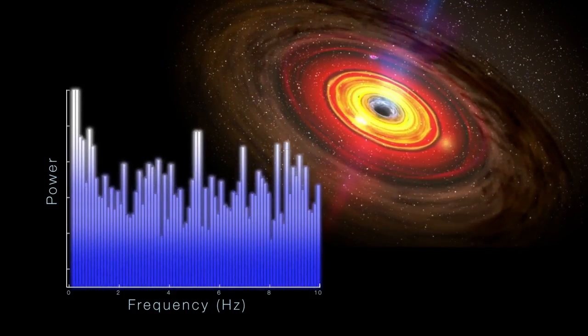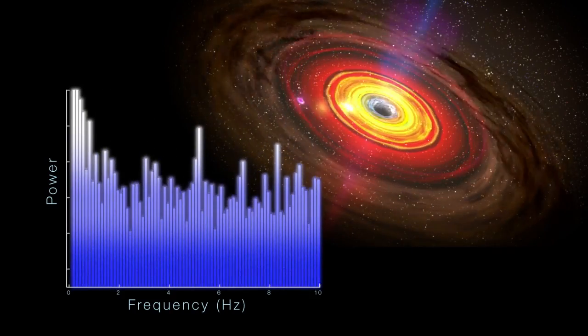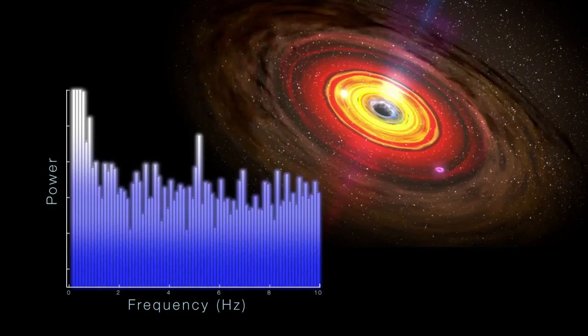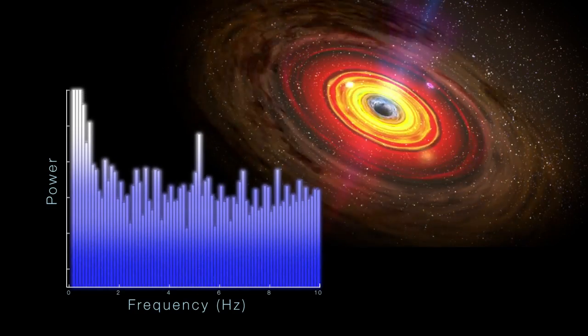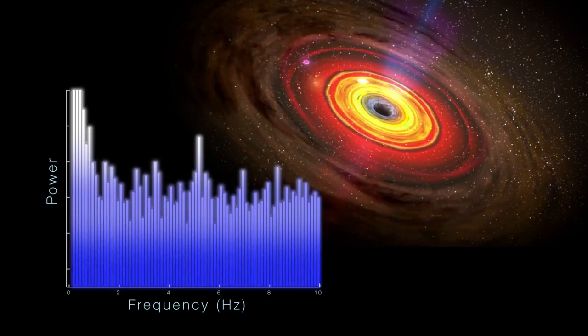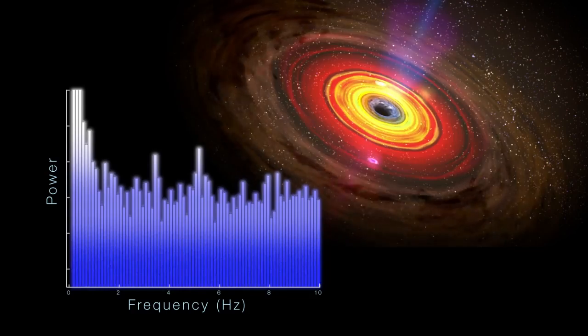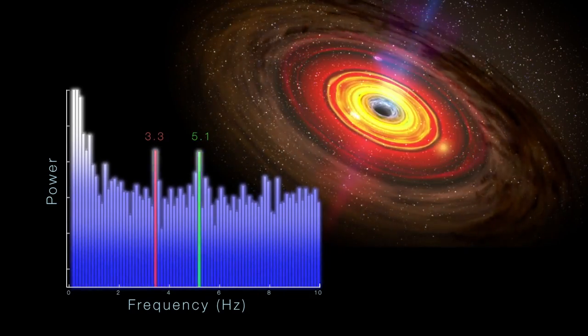In searching through six years of RXTE observations of M82X1, astronomers recently found this key signature. One hotspot flashes 5.1 times a second, while the other flickers 3.3 times a second. A solid 3-to-2 relationship.